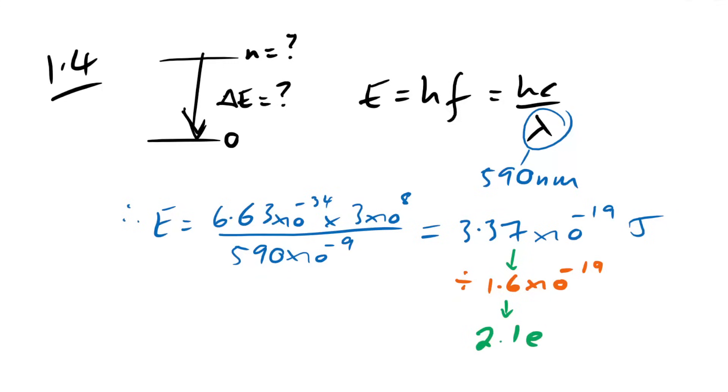We're asked for the answer in electron volts, and we have it in joules. The conversion factor is 1.6×10⁻¹⁹, so we divide by it to get a bigger number of electron volts. That gives us approximately 2.1 eV.